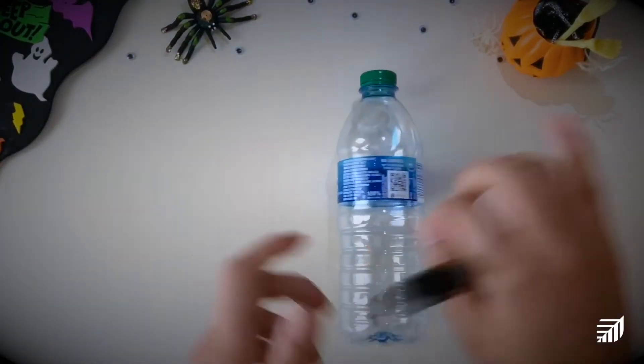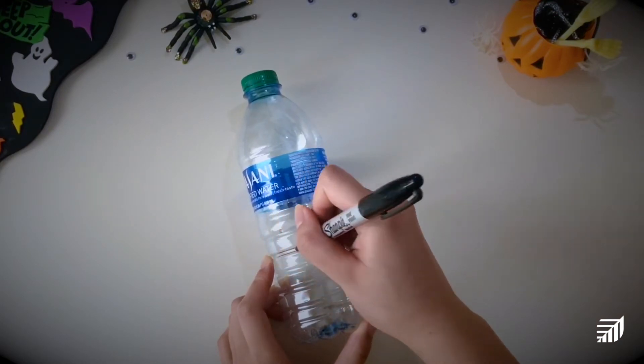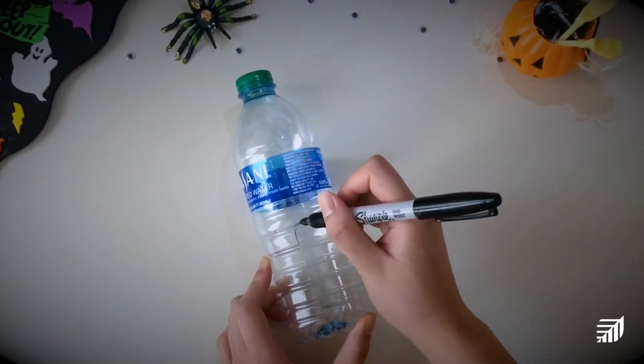We're going to start off with our pumpkin so I'm just going to trace the shape of a pumpkin with a little stem on the lower part of my water bottle.